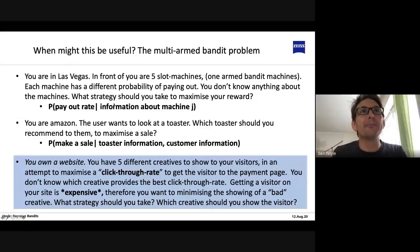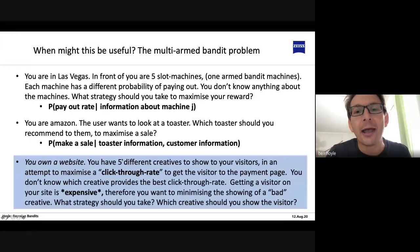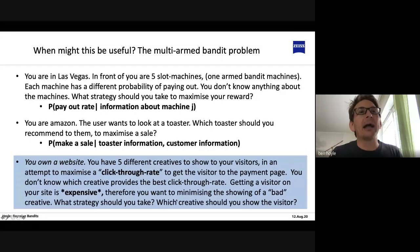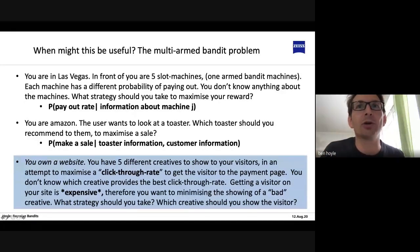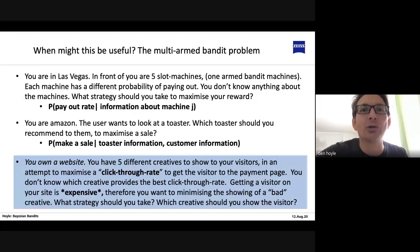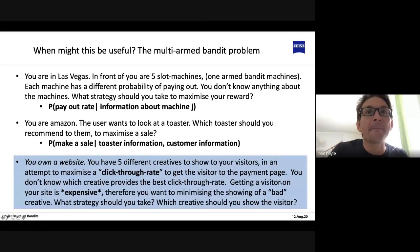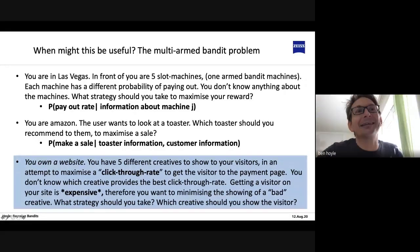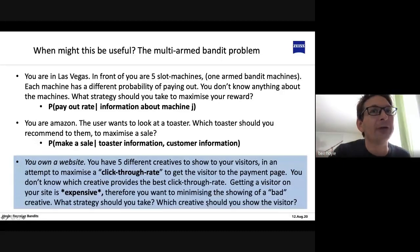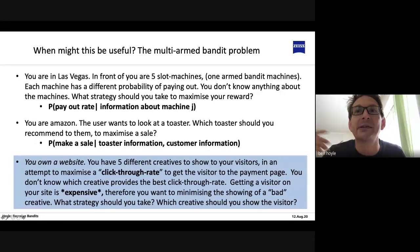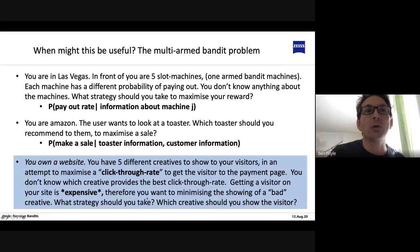You can use the multi-armed bandit solution for this type of problem, as well as for recommendation problems. The problem we'll look at: you're a website owner, you've got five different creatives to show your visitors, and you want to maximize the click-through rate to get a visitor to the next stage or the payment page. You don't know which creative provides the best click-through rate right now. And importantly, getting a visitor on your site is expensive — therefore you want to minimize showing a bad creative.